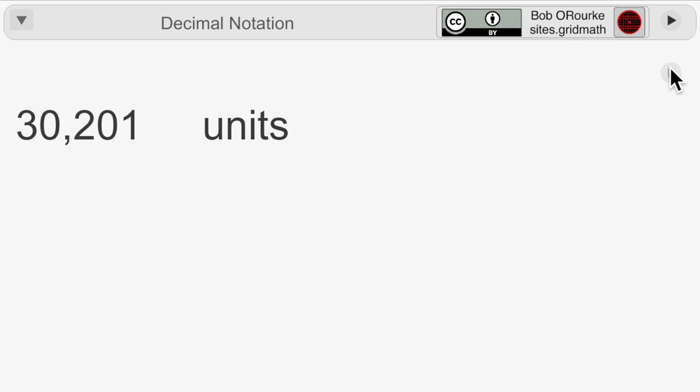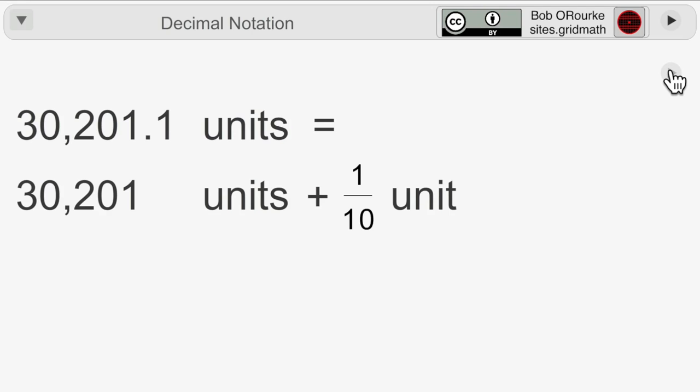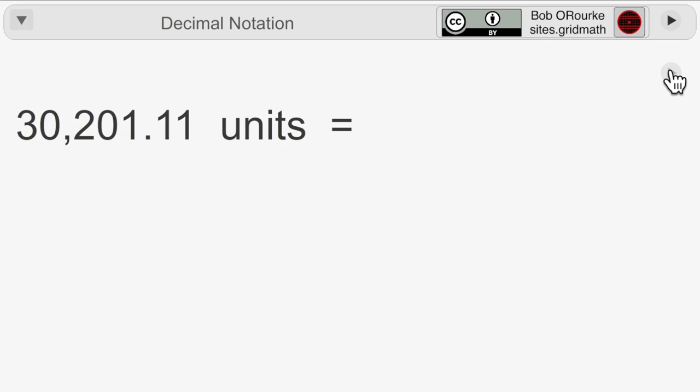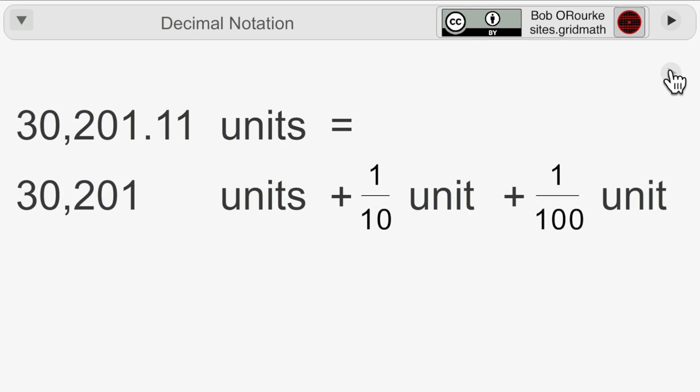With the modern decimal notation, there's one thing I like to point out about the numbers to the right of the decimal point. You start with, say, .1, that would be the total number of units to the left, plus one tenth of a unit to the right. If you did .11, that would be one tenth of a unit, plus one one hundredth of a unit to the right.